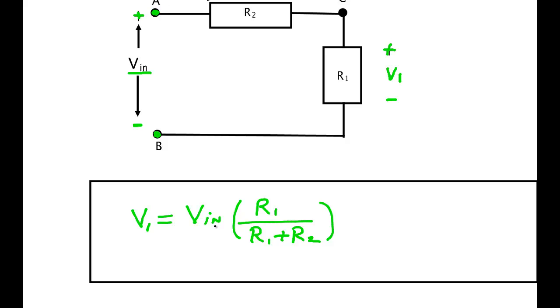A couple of things to note: if you call this plus minus, then the current needs to come out of the plus of the power supply and into the plus of the resistor. So I am assuming that you've chosen your plus minus in the direction shown. If you choose them oppositely, then you'll have a minus sign here.